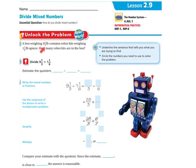A box weighing nine and one third pounds contains robot kits weighing one and one sixth pound each. How many robot kits are in the box? First, let's underline the sentence that tells you what you're trying to find: how many robot kits are in the box. Next, let's circle the numbers we need. The whole box weighs nine and one third, and each kit weighs one and one sixth.